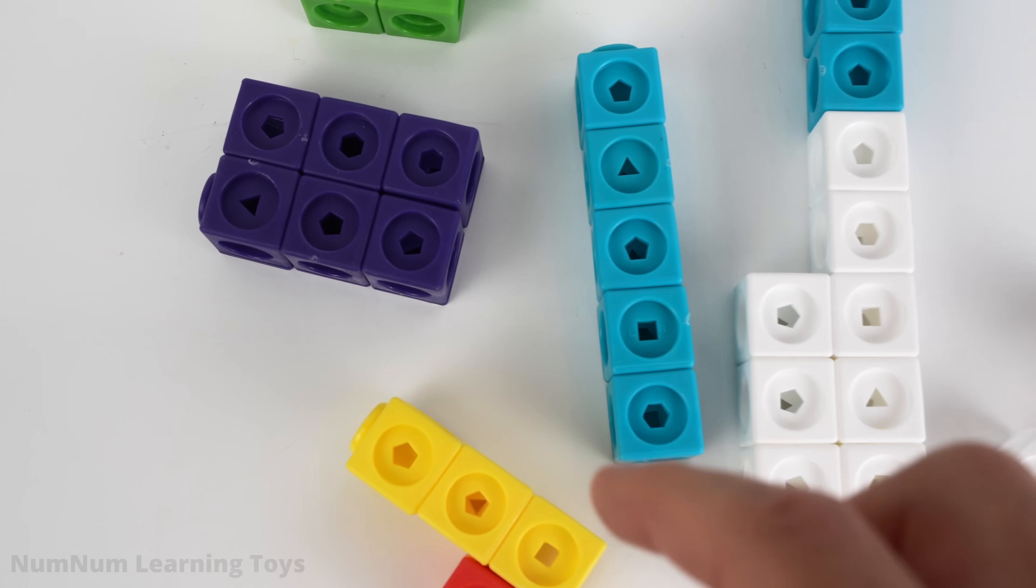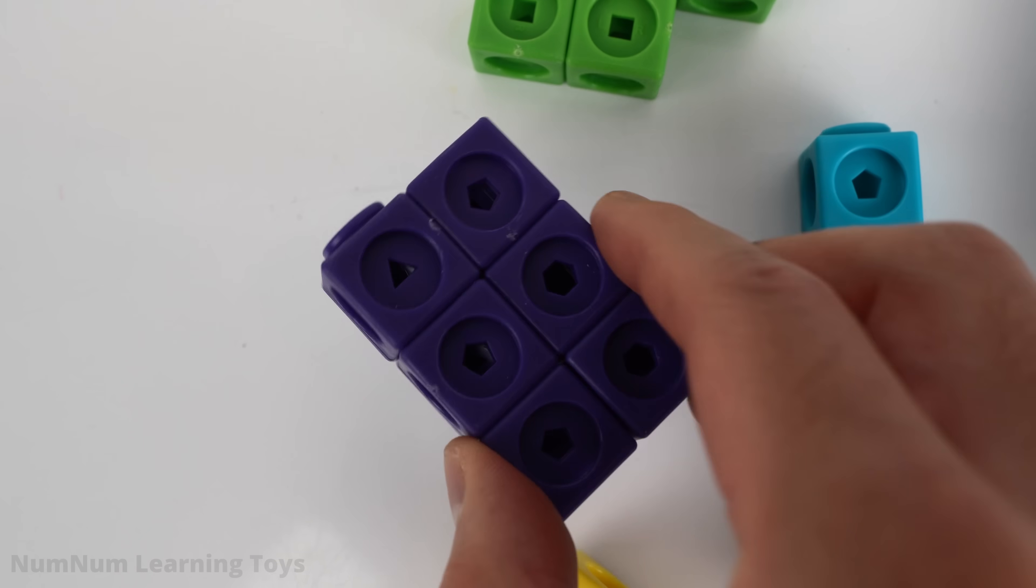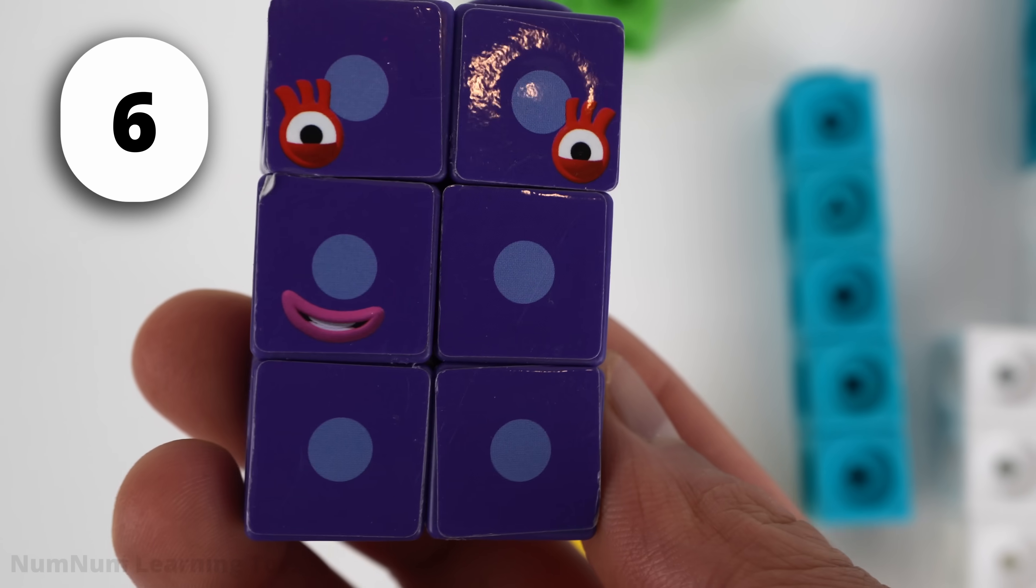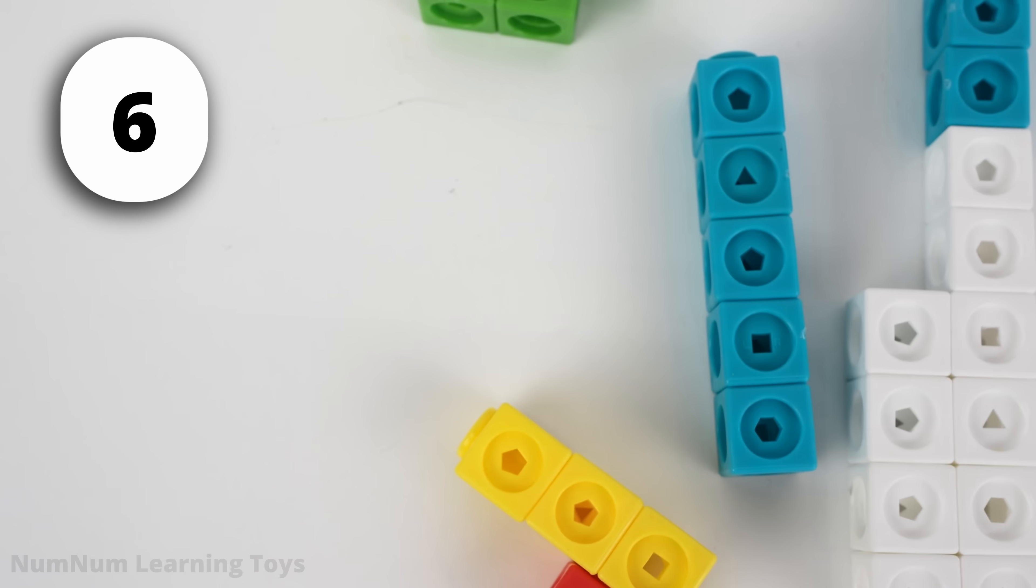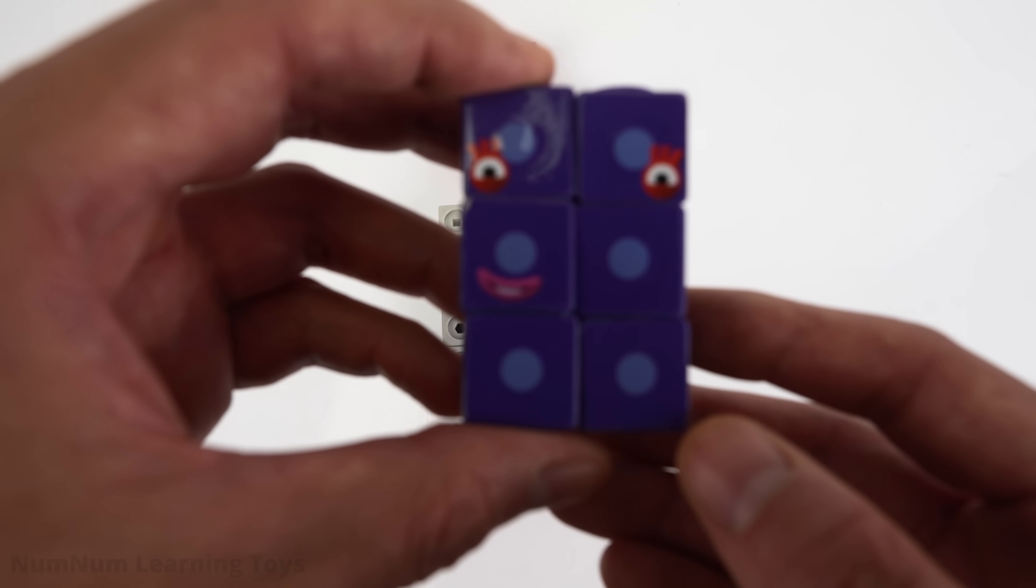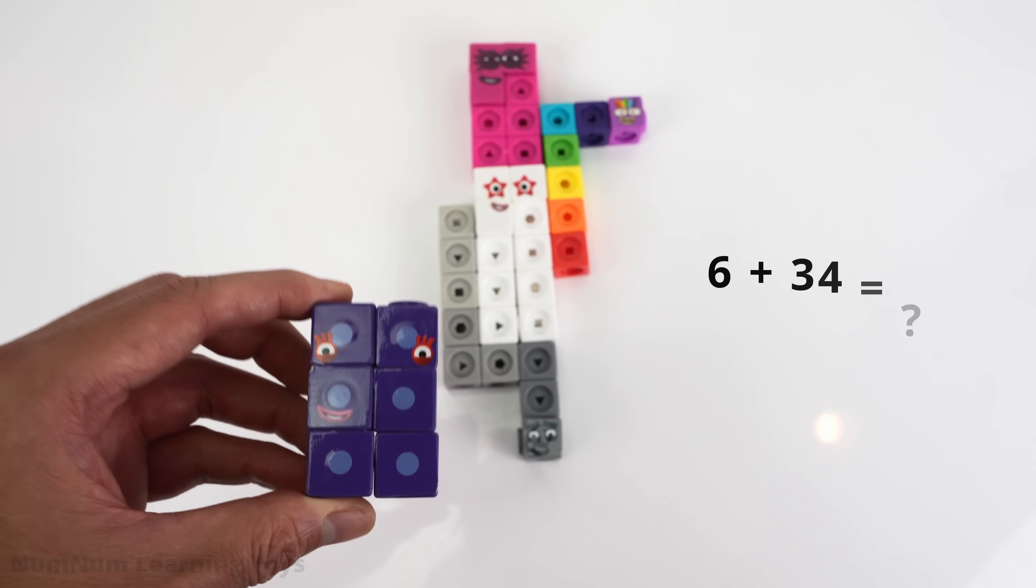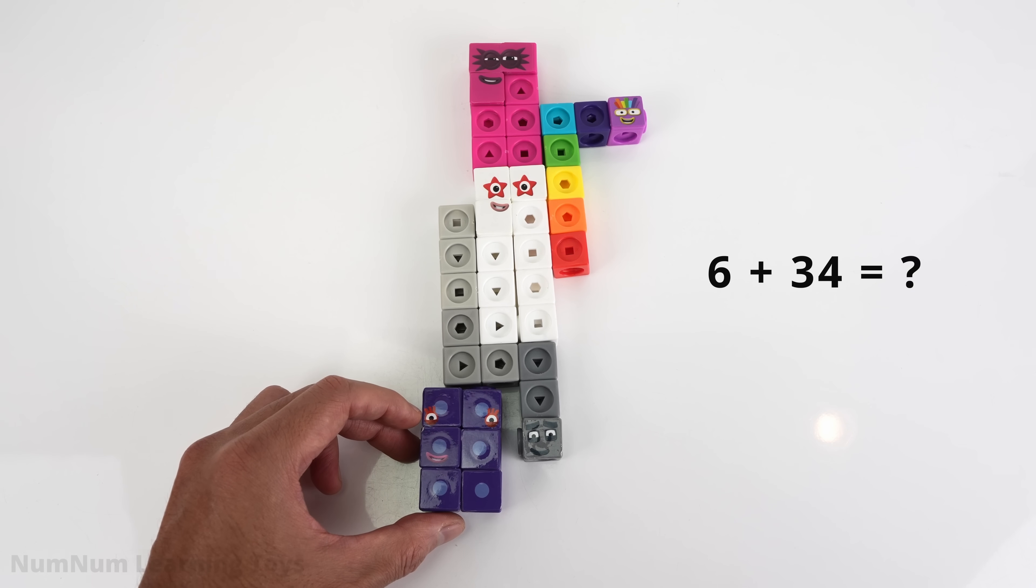Do you see the 2x3 rectangle? That's the next number. It's number 6! When we add 6 to 34, we get 40!